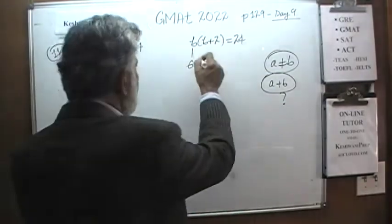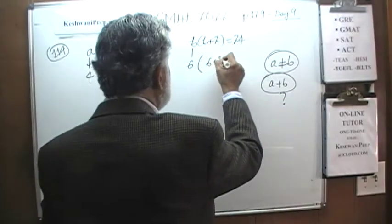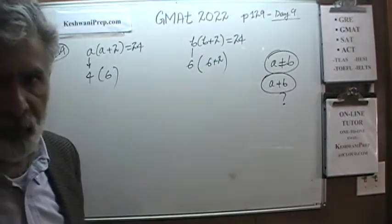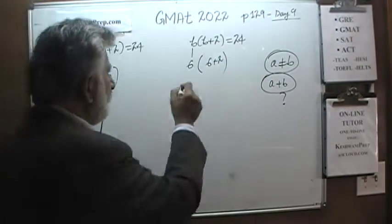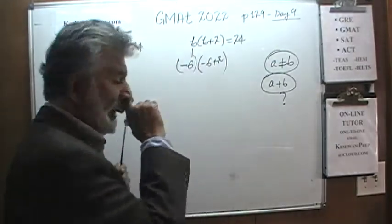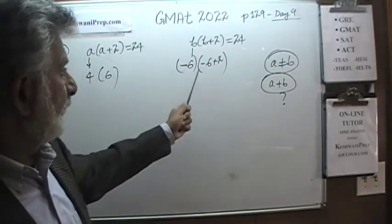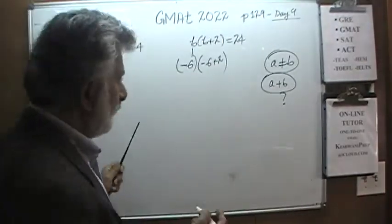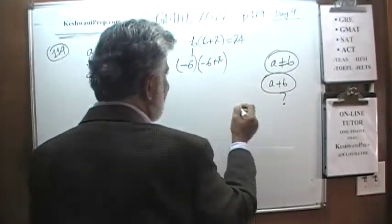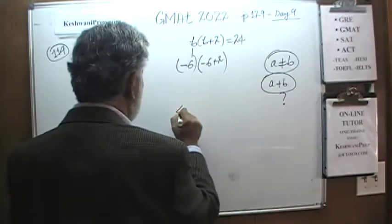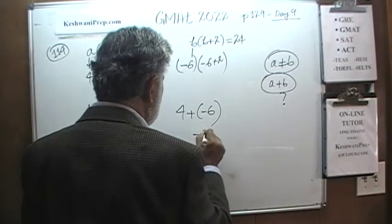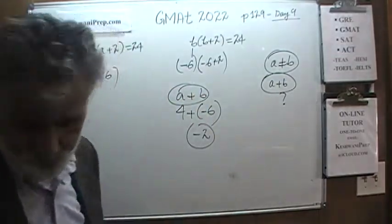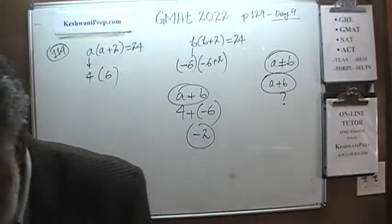What we need to do is make B equal to negative 6. Negative 6 times negative 4 equals 24, which works. Now A is not equal to B. A is 4 and B is negative 6, therefore the sum A plus B is negative 2. That was problem 114.